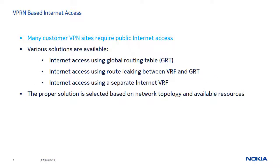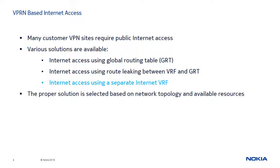Many VPN sites need to access the public Internet in addition to accessing other VPN sites. There are various possible solutions available to accomplish this. The first option is valid when the Internet routes reside in the base route table or GRT of the local PE — in this case the CE uses a separate interface that terminates on the GRT of the PE. The second option is valid when the Internet routes reside in the GRT of a remote PE; the CE uses its existing VRF interface and routes are leaked between the VRF and the GRT on the remote PE. The third option is valid when Internet routes reside in their own VRF; Internet access is provided to the CE via its VRF interface by importing the Internet routes into the VRF. Note that the proper solution is selected based on network topology and available resources.